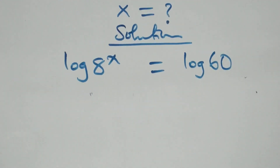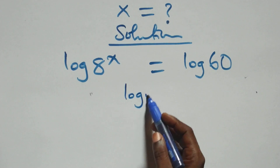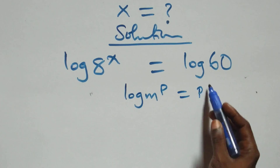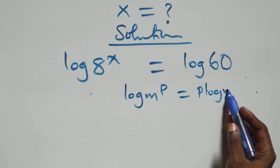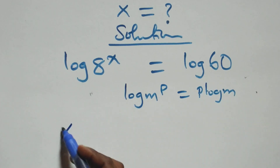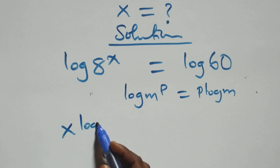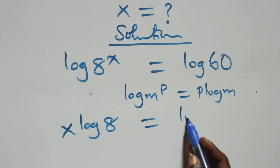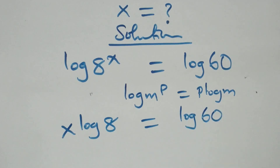The next step here, we apply the power law of logarithm. When we have log m raised to power p, this is the same thing as p times log m. So this becomes x times log 8 equals to log 60.